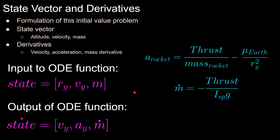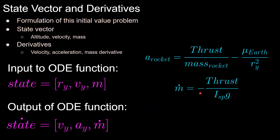To solve the equations of motion with a differential equation solver, we must define our state variables and their time derivatives. For one-dimensional motion, the state variables are position in the y-direction, velocity in the y-direction, and mass, since the acceleration due to thrust is a function of the rocket's mass. Their respective derivatives are velocity, acceleration, and m-dot. The acceleration equals thrust divided by mass at that time step minus mu of the Earth over ry squared. The time derivative of mass equals negative thrust over specific impulse times g, where g is 9.81 meters per second squared — this uses the ISP definition in seconds, not meters per second.